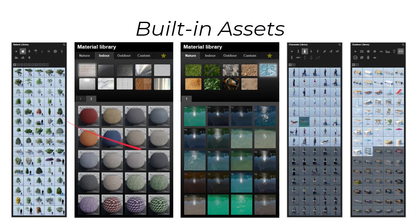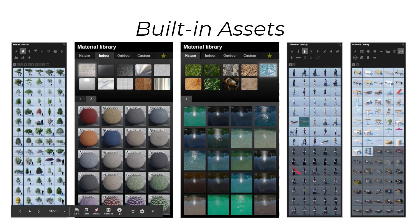Next, Lumion has all these built-in assets, which is something I really love about it. You don't need to hunt for assets or buy and download models to use in your scene. You can use what's built in for the most part. There's a lot of great stuff — trees, plants, cars, people, as well as plenty of different materials: indoor, outdoor, and natural materials. And if you choose to purchase the pro version of Lumion, you'll have access to even more models.